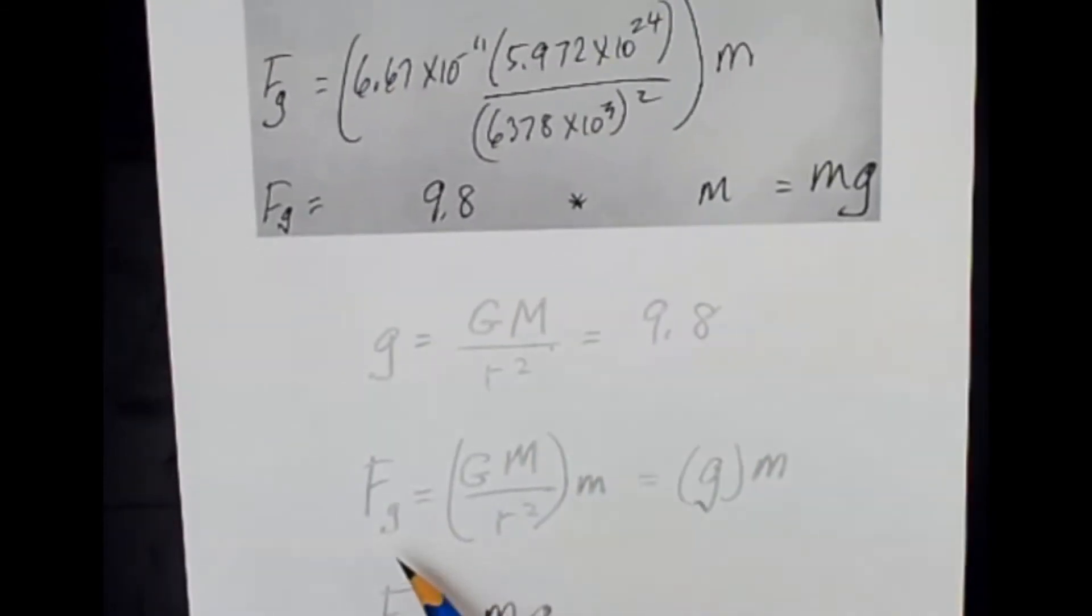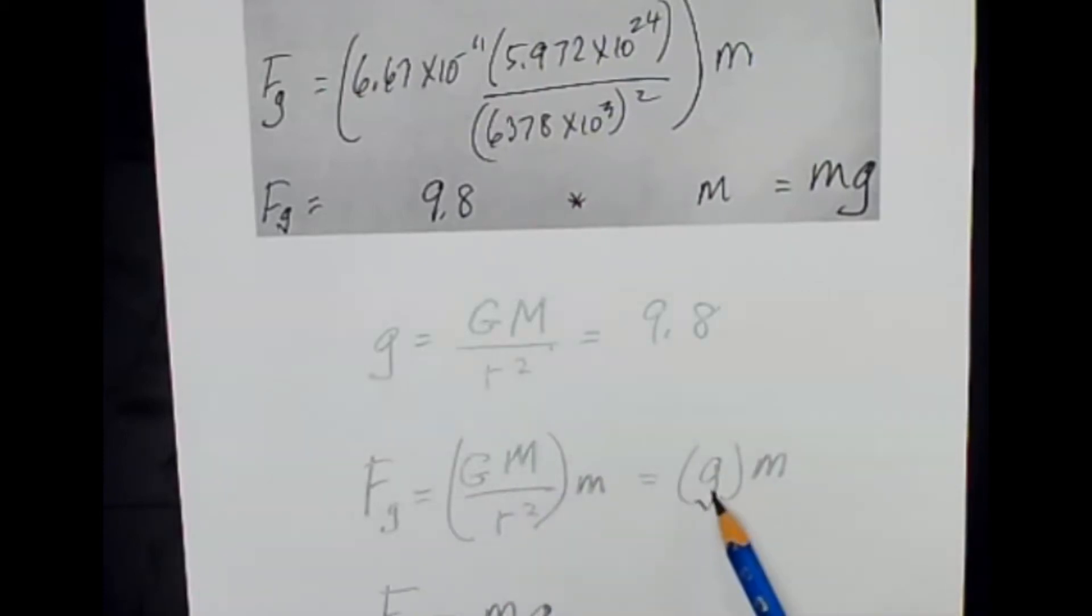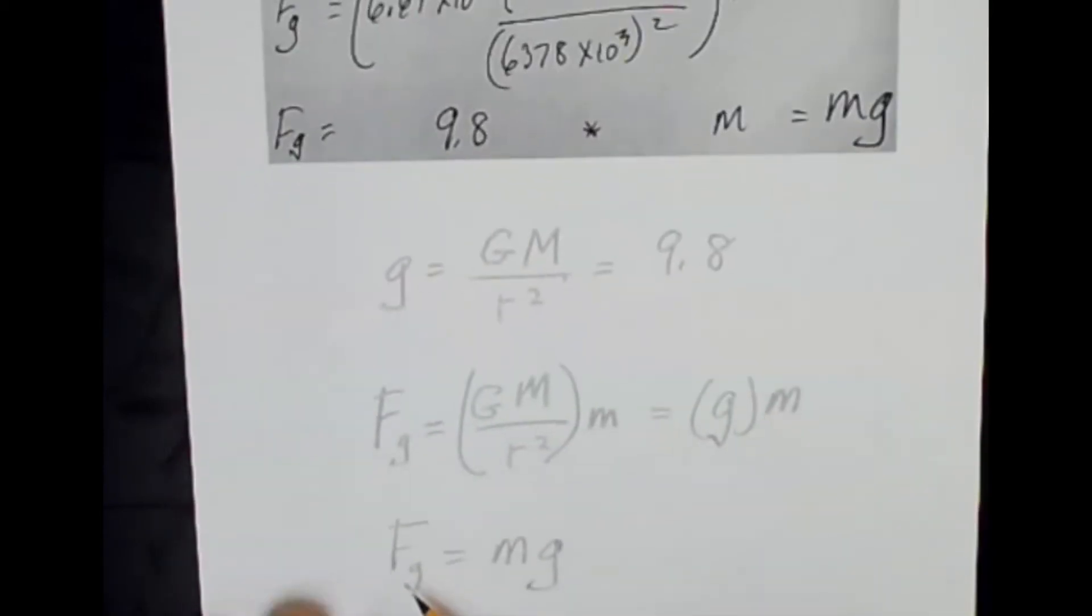Remember, we're taking Newton's Universal Law of Gravitation, and we're showing that this part right here is equal to 9.8, which is g, which the force of gravity then, also known as our weight.